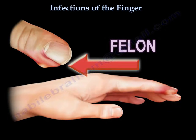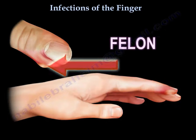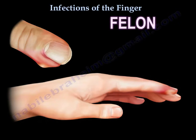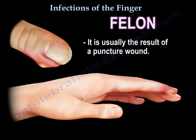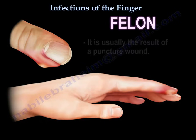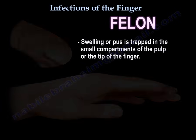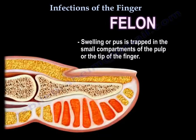A felon is a deep infection of the soft pad or pulp of the fingertips, usually the result of a puncture wound. Swelling or pus is trapped in the small compartments of the pulp at the tip of the finger.